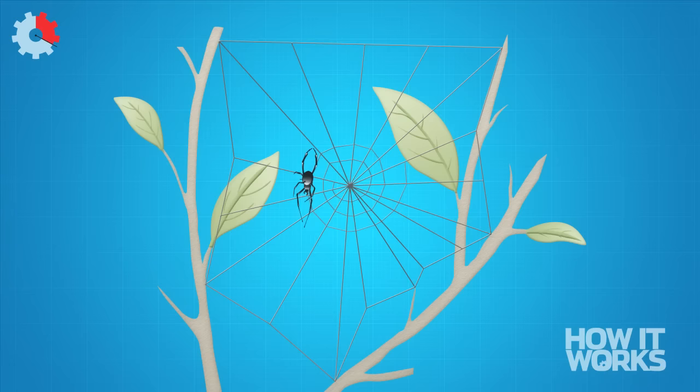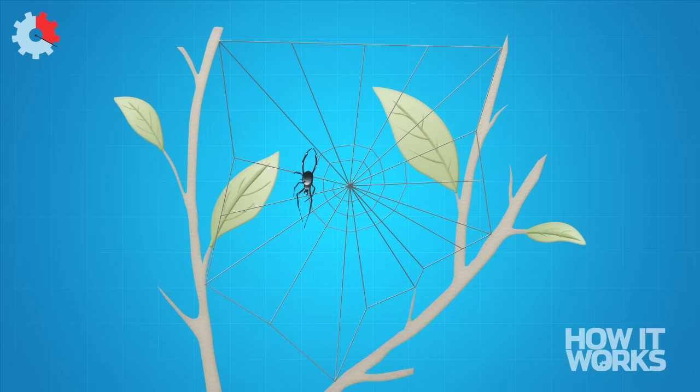Next the spider creates a silk spiral across the radial lines from the inside out. Using this as a template it repeats this stage except this time coats the thread in a bug catching adhesive.